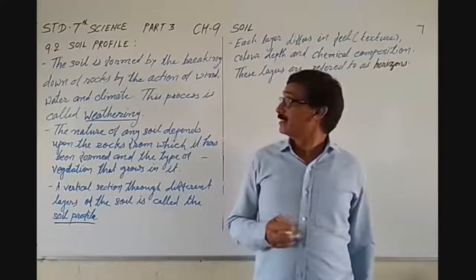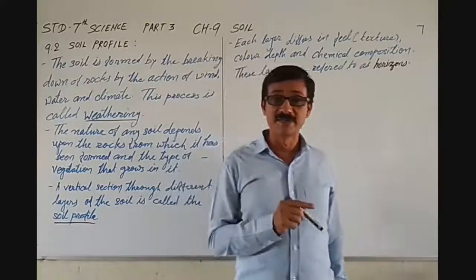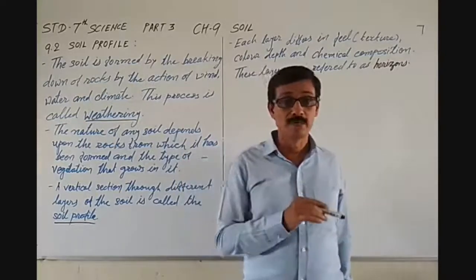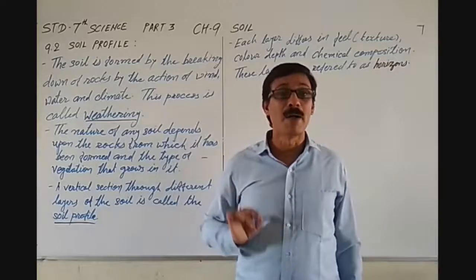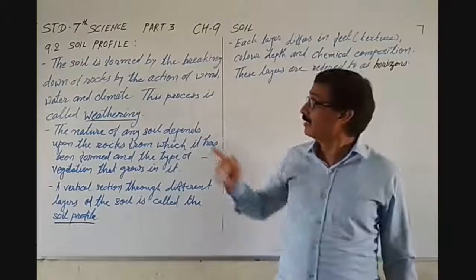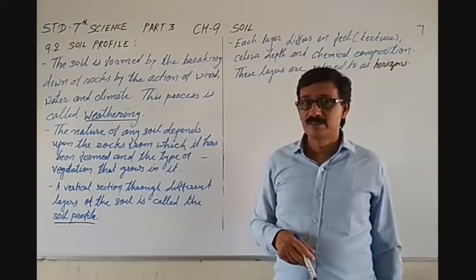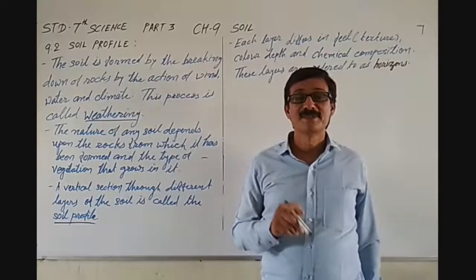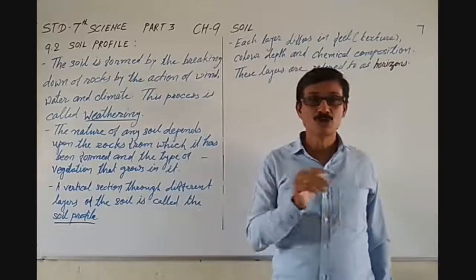From the last part, we are discussing soil profile. In the last part we did an activity to see the layers of soil, and from there we concluded that soil is made up of various types of particles. We also discussed humus — the dead rotting material in the soil is known as humus.